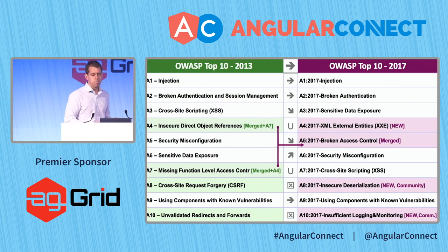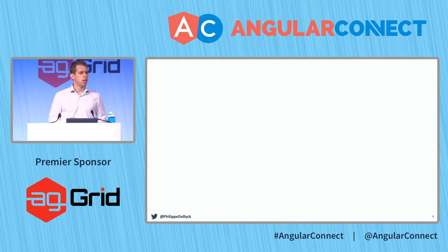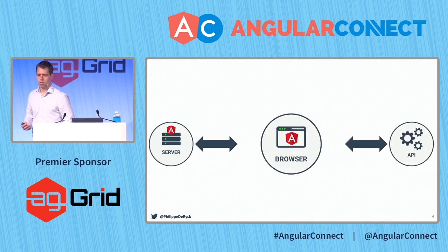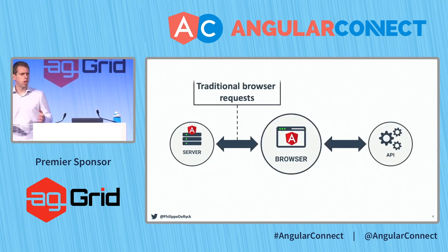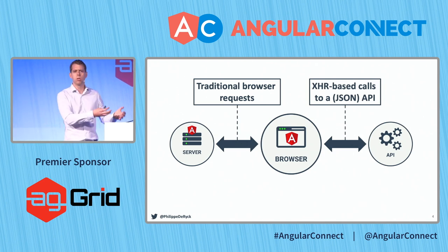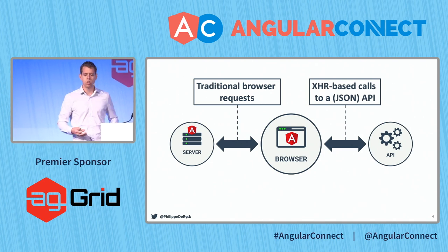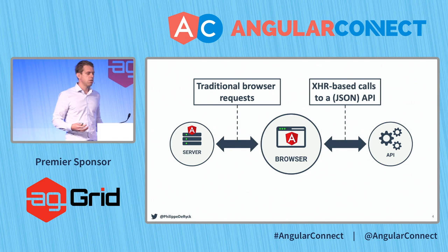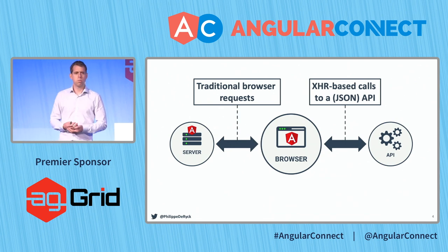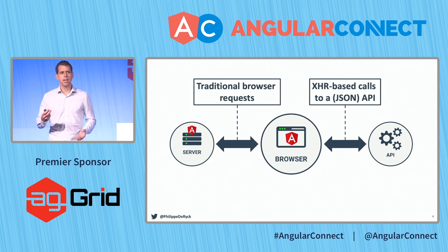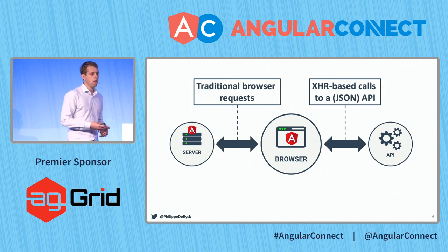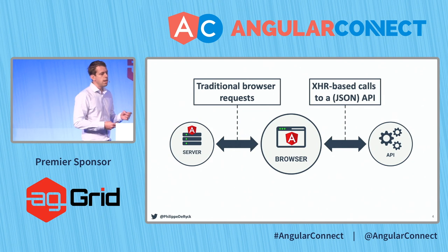I'm going to talk about how the OWASP Top 10 applies to Angular applications, because Angular applications are different. They are not really traditional web applications. You don't generate pages on the server and send them to the browser for rendering. You load the application with traditional requests one time — you have your SPA, your single page application loaded — and at that moment, we're essentially calling APIs and doing things on the front end.